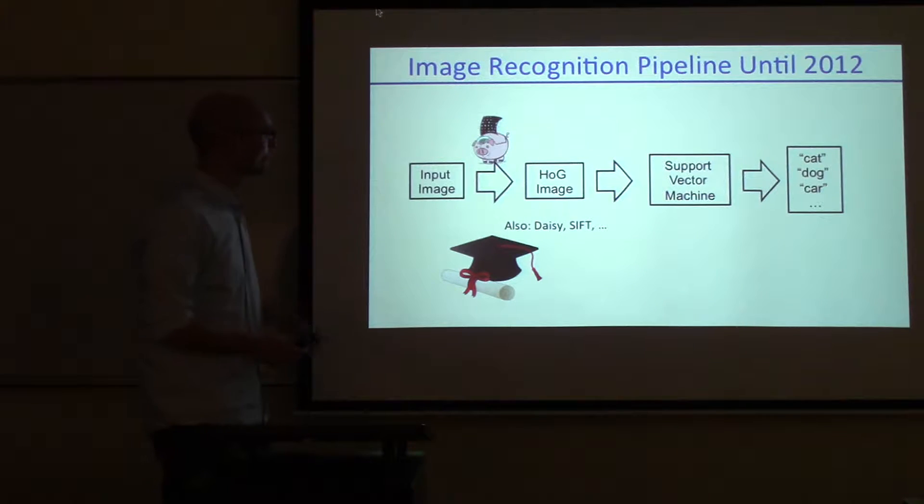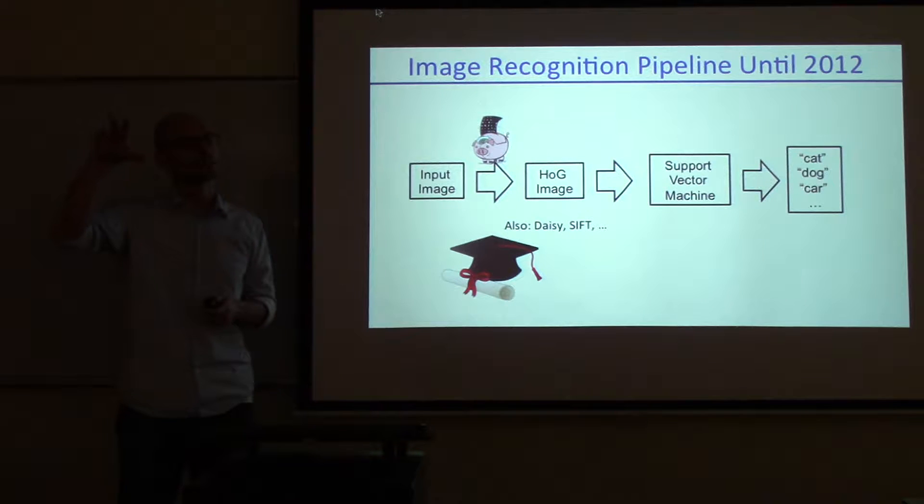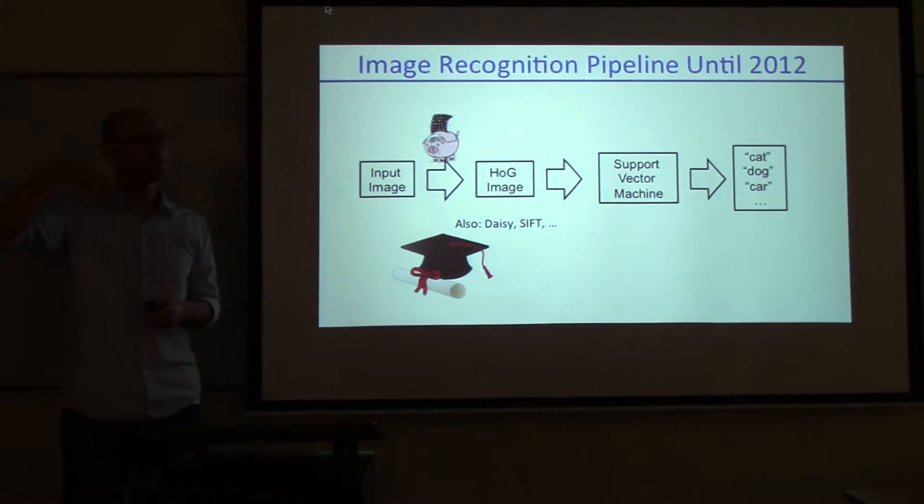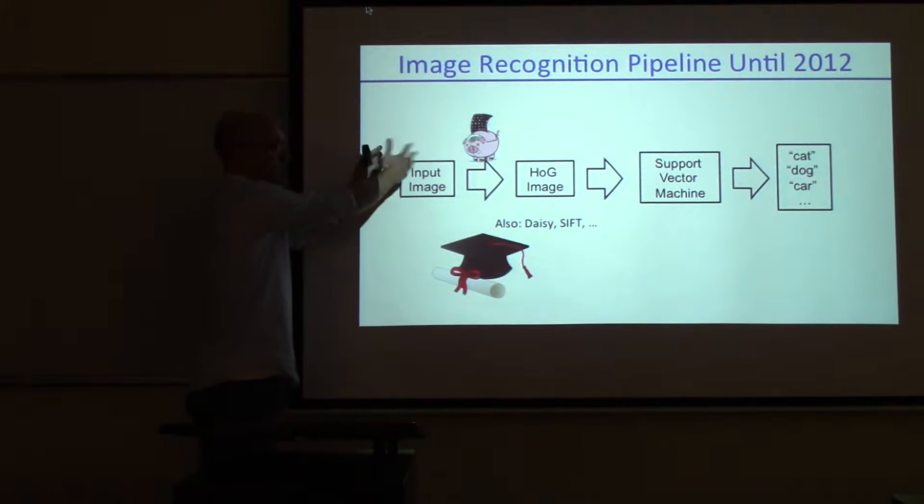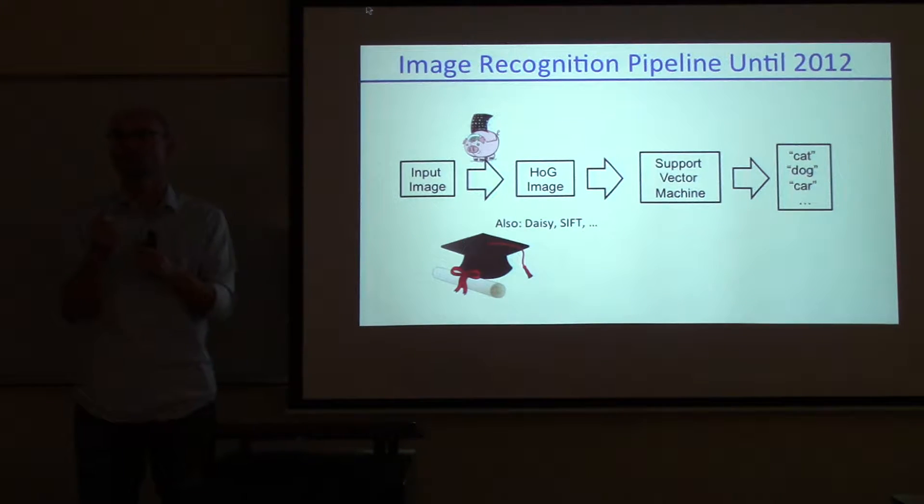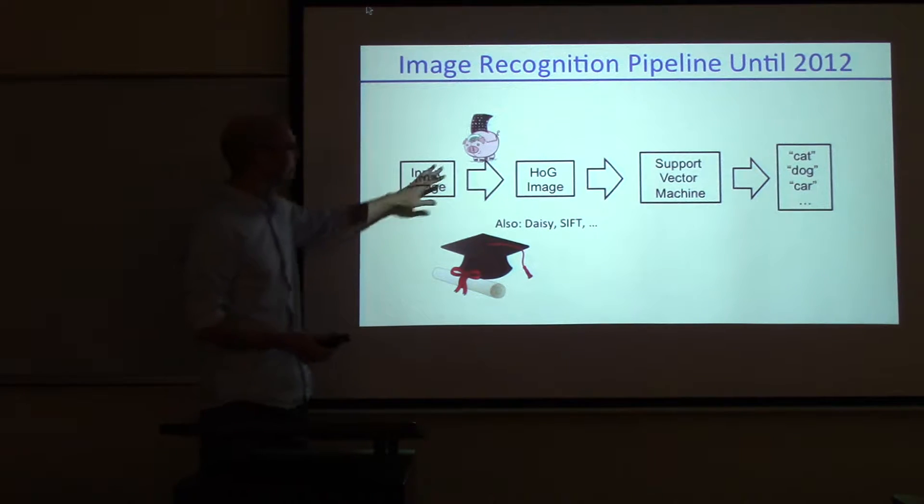The way computer vision was often solved until 2012 was you have an input image, but if your camera just changes viewpoint a little bit, the pixels will change a lot. If the lighting changes, the pixel values will change a lot because an image is just a bunch of numbers reflecting how much red, green, and blue there is in that part of the scene.